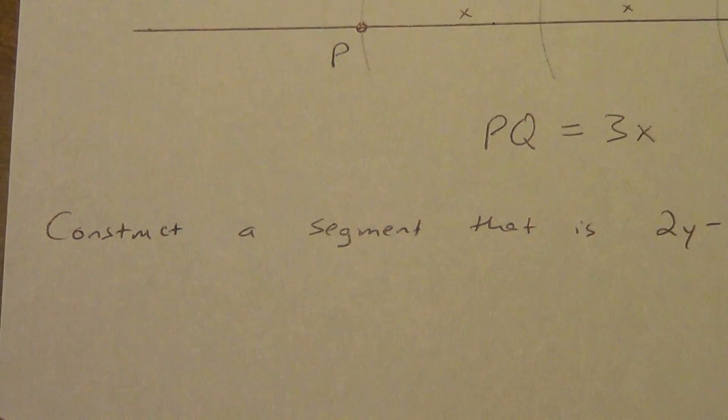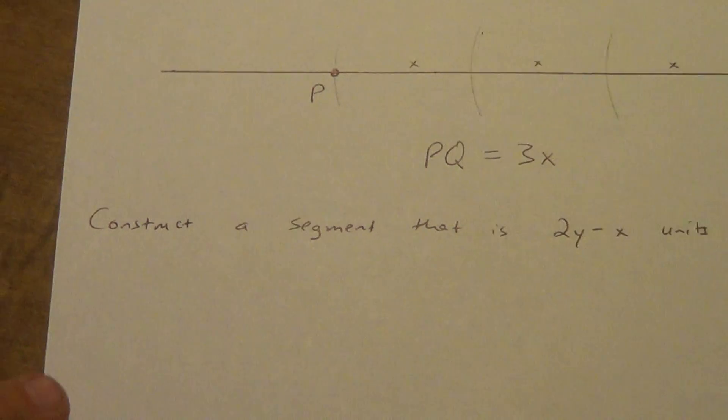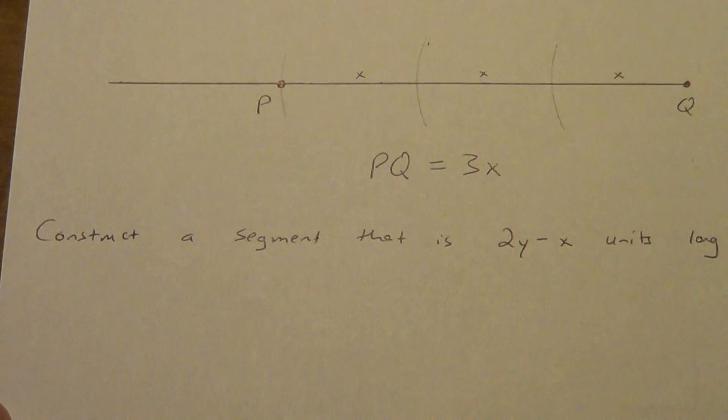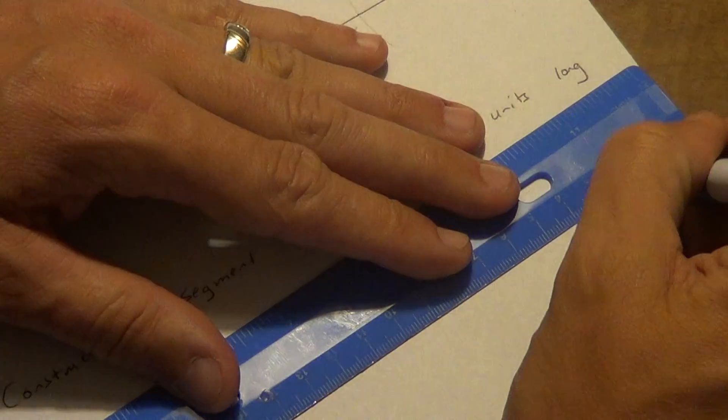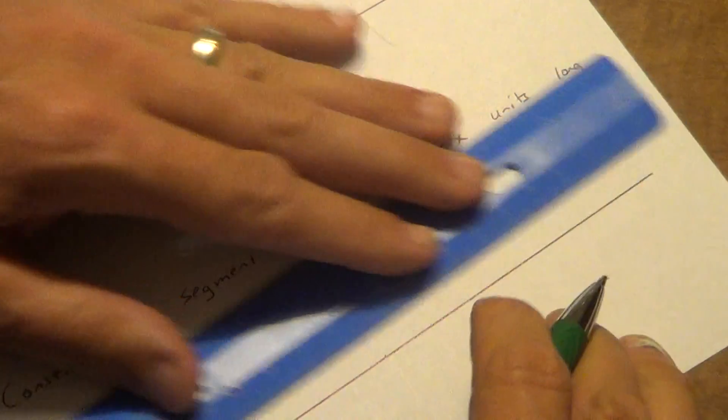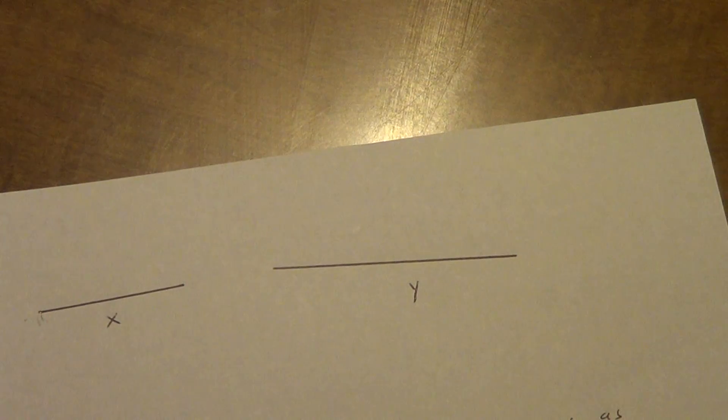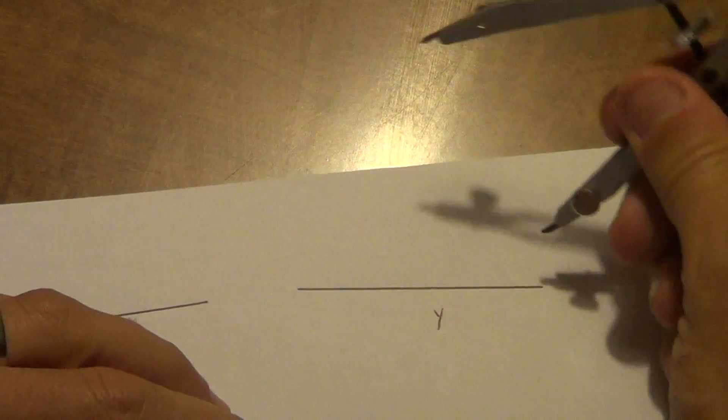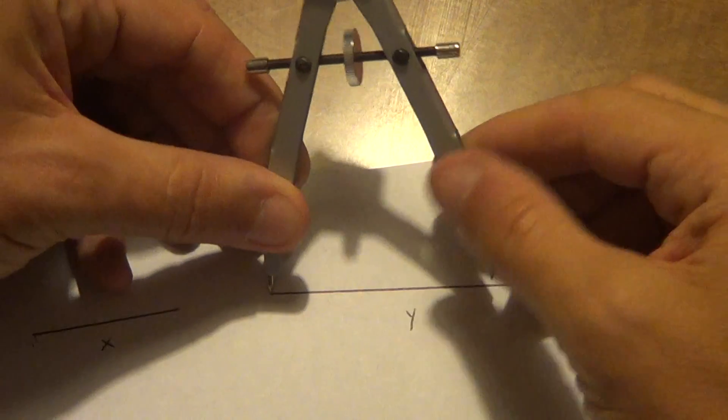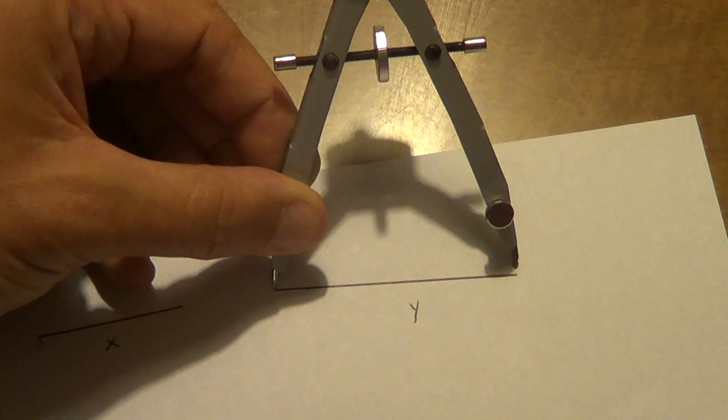We're going to do one more using those X and Y's again. This time I'm going to construct a segment that is 2Y minus X units long. That minus is going to change things up a little bit. Once again, start the same way: draw a segment that you know is definitely too long. Now this time I've got to start with Y. I've got two Y. So I'm going to get my compass measured for Y. I definitely need to widen this up a bit. Does that look good yet? Nope. A little bit wider. That looks pretty good.